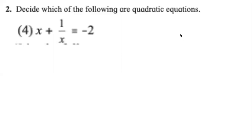The next clarification is about parts 3 and 4 of question number 2, which says 'decide which of the following are quadratic equations.' The way we decide for an equation is a bit different from deciding for a polynomial. For a polynomial, we can just look at it — for example, this polynomial is definitely not quadratic because the power of one term is −1, which means it is not even a polynomial.